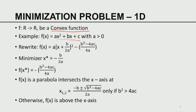The second term does not depend on x; the first term depends on x. By choosing x = −b/2a we can annihilate the first term. Therefore, x* = −b/2a is the minimizer, and the minimum value of the function is f(x*) = −(b² − 4ac)/4a.